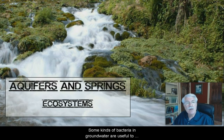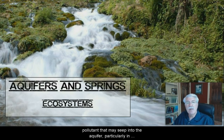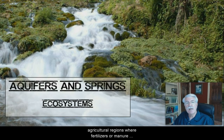Some kinds of bacteria in groundwater are actually useful to humans. An example is denitrifying bacteria, and these remove nitrates. Excess nitrates are a water pollutant that may seep into the aquifer, particularly in agricultural regions where fertilizers or manure containing nitrates are spread on soils to enhance growth of food crops.